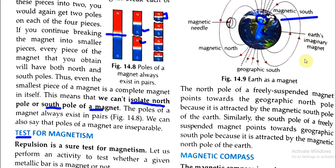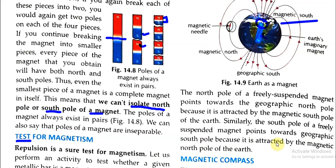The north pole of a freely suspended magnet points towards the geographical north pole because it is attracted by the magnetic south pole of the Earth. Similarly, the south pole of a freely suspended magnet points towards the geographical south pole because it is attracted by the magnetic north pole of the Earth. So Earth's magnetic north pole is near the geographic south.